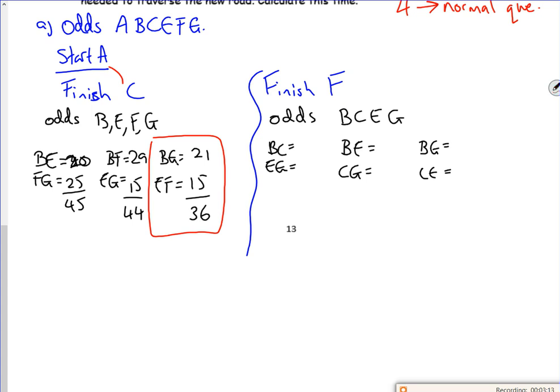So let's have a quick double check of this one. BC with EG is 18 and 15, so that's 33. BE with CG is 20 and 36, so that's 56. And BG with CE is 21 and 26, which is 47. So if I'm doing from A to F, my best one is there.